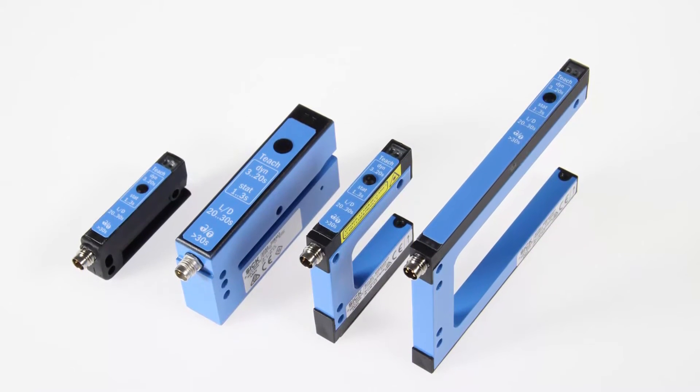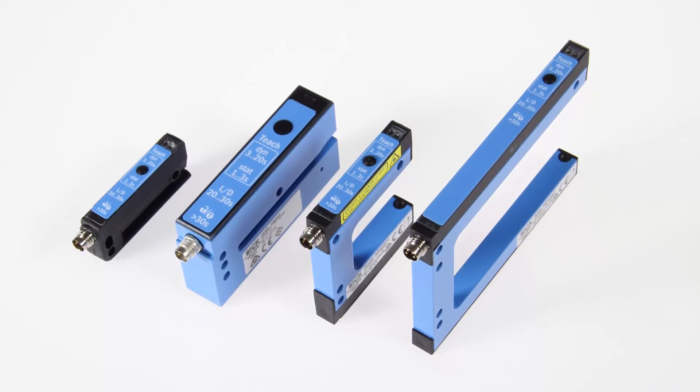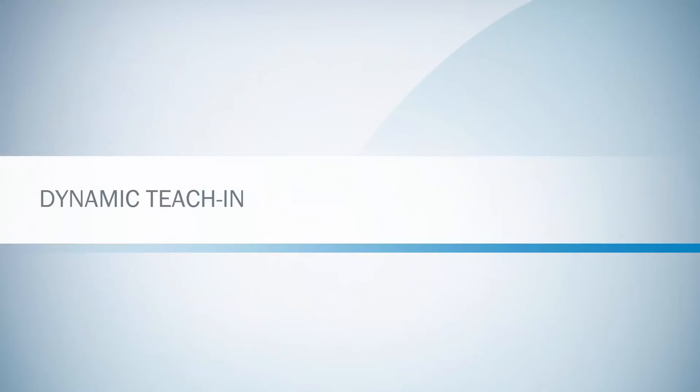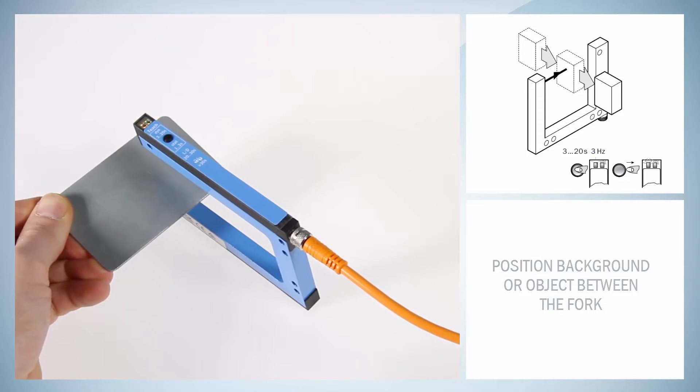There are several ways how to teach in the fork sensors. As an example, we are using a WFN. Dynamic Teach-In: To start the Teach-In, position the background or the object between the fork.